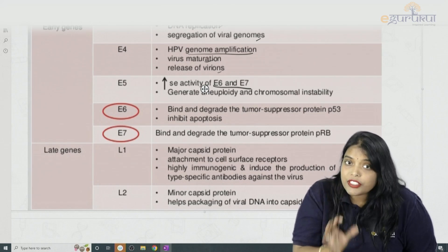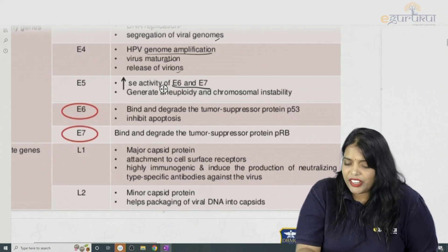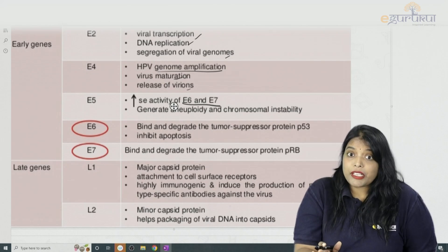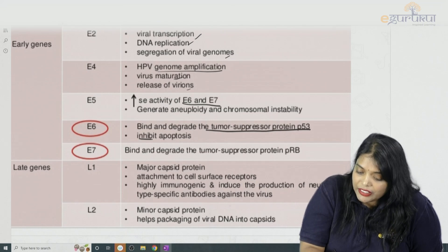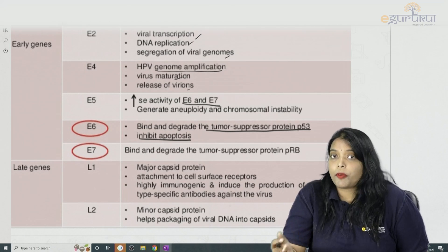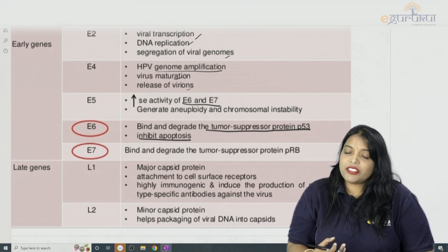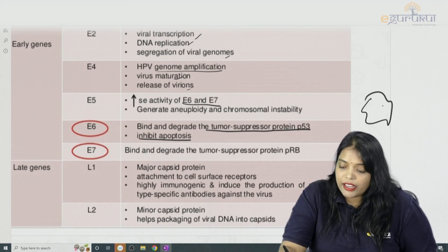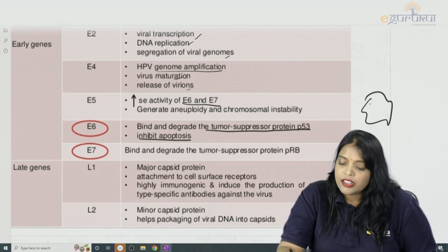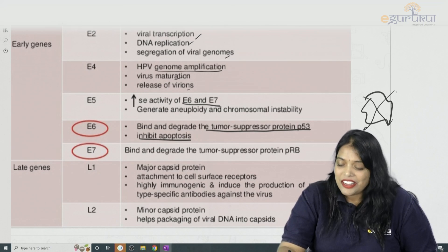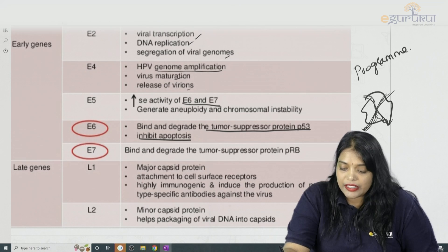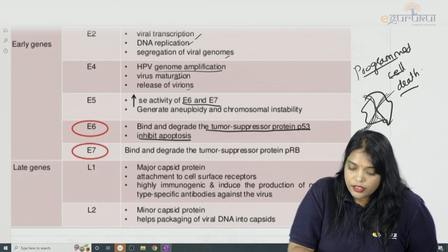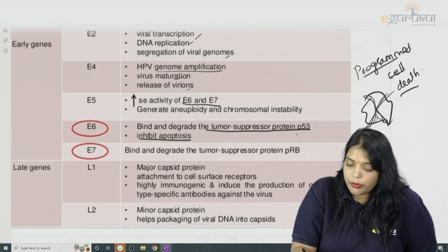For cancer to develop, the most important genes are E6 and E7. E6 binds and degrades the tumor suppressor protein p53, thereby inhibiting apoptosis — the programmed cell death. Normally, whenever there is an infection or abnormality, the cell undergoes programmed cell death, which we call apoptosis. E6 suppresses this by degrading p53.